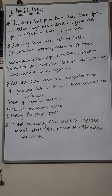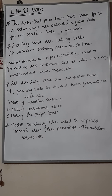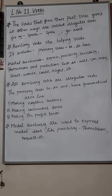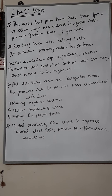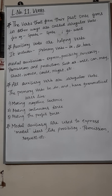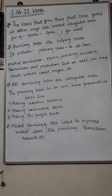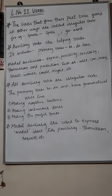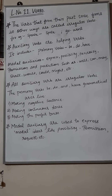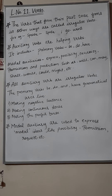For example, to make a negative sentence: 'I brushed my teeth' becomes 'I did not brush my teeth.' For continuous tense, you add -ing: 'I am brushing my teeth.' For present perfect tense, you use have plus ED: 'I have brushed my teeth.' Modal auxiliaries are used to express modal ideas like possibility, permission, request, etc.